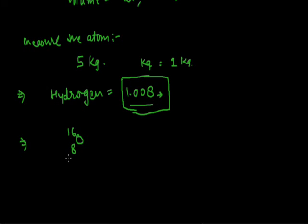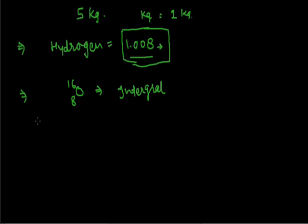Next, after hydrogen, the standard taken was oxygen (⁸O¹⁶). But again there was a problem — there are isotopes of oxygen, so the average atomic mass of oxygen is not integral. Finally, the standard taken was carbon-12 (⁶C¹²), whose average atomic mass is exactly 12.